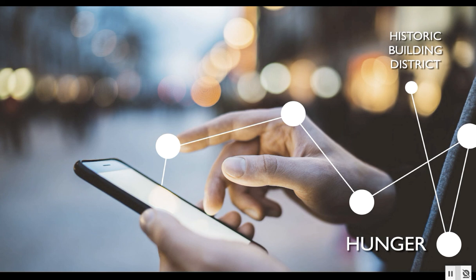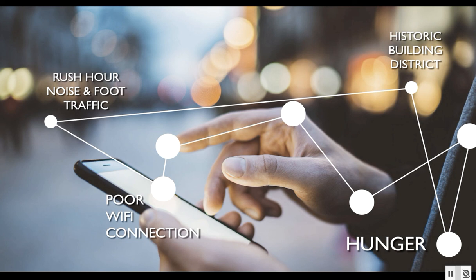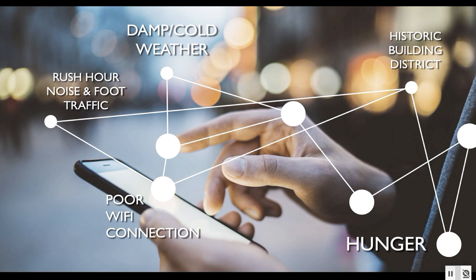Let's complicate it by saying we're in a historic building district — lots of cool places around, great interiors, good variety of cuisine — which motivated getting on the phone to look for a nearby place. But because it's a popular historic district, maybe it's also rush hour: lots of foot traffic, noise, and visual distraction that complicates the interaction. At the same time, all those people also have devices, and the big stone buildings with steel girders cause deflection of the Wi-Fi signal, decreasing the quality of the interaction because of the poor connection.